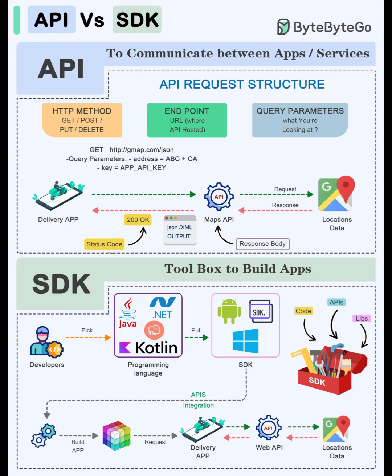API is the contract for conversation. SDK is the toolbox to build. Picture roads versus vehicles: the API is the rulebook of a road — where to drive and how to signal. The SDK is a ready-made car with navigation, seatbelts, and service manuals.